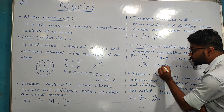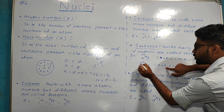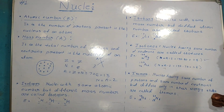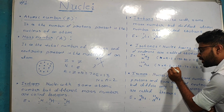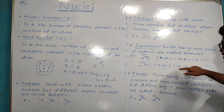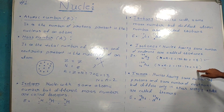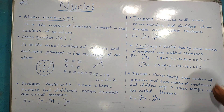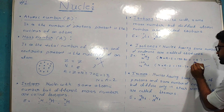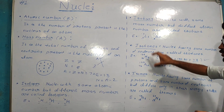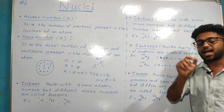For the second element, the number of neutrons is equal to mass number 197 minus atomic number 79, which also gives 118. The number of neutrons is the same for both — so they are isotones.